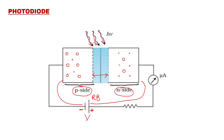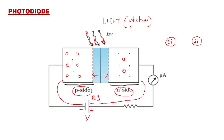In reverse bias, the external voltage has the negative terminal connected to the p-type semiconductor and the positive terminal connected to the n-type, making the diode reverse biased. Now light is incident on the depletion region. Light is made up of particles called photons, and the energy associated with these photons will break the covalent bonds between the atoms in the semiconducting material. For example, if we use silicon atoms, every silicon atom makes a bond with its adjacent atom.